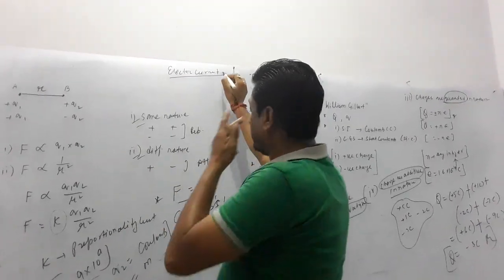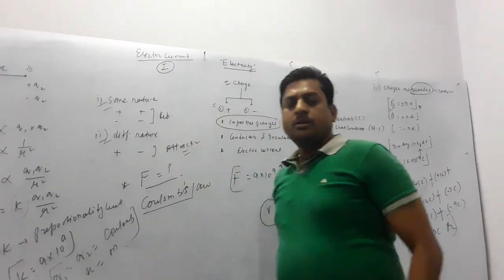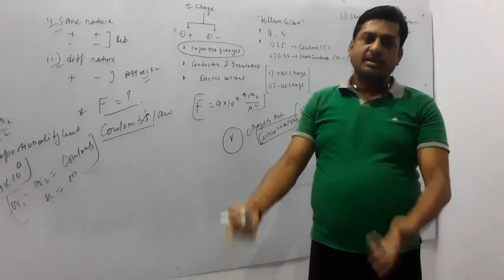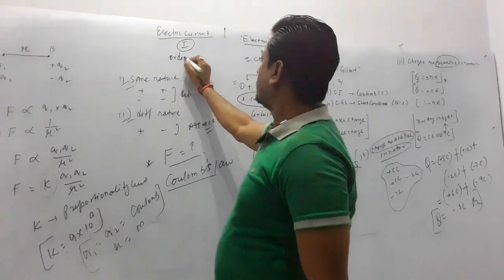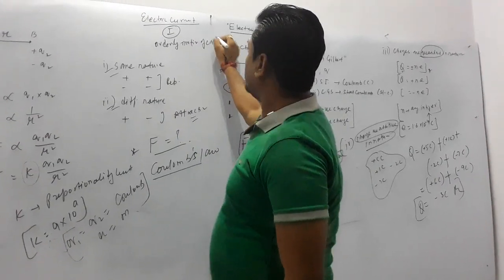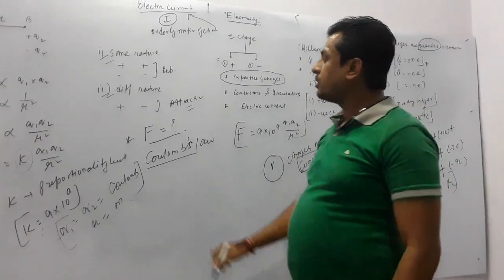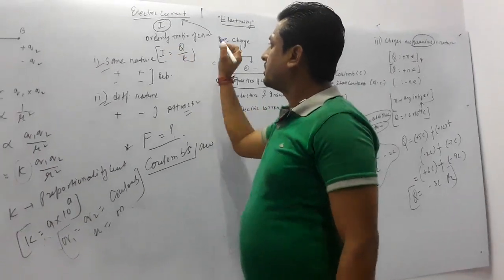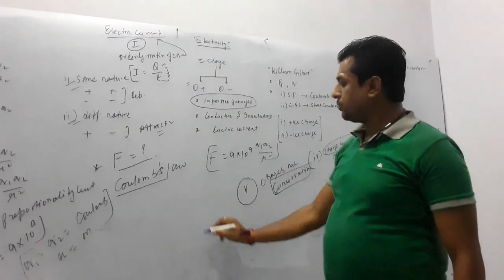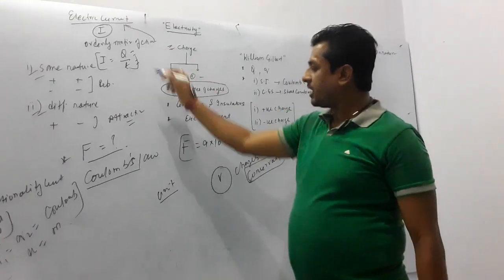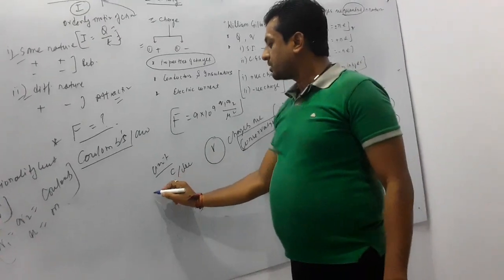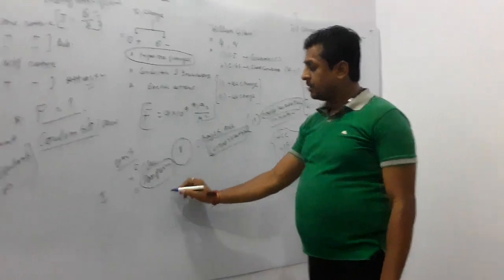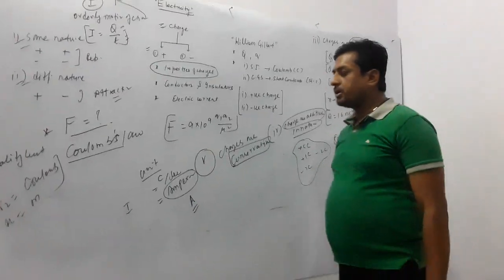The symbol of electric current is I. The theoretical definition of electric current is: electric current is the orderly motion of charge. Mathematically, electric current is the rate of flow of charge, i.e., flow of charge per unit time. The unit of electric current is coulombs per second, which is also called ampere, with symbol capital A.